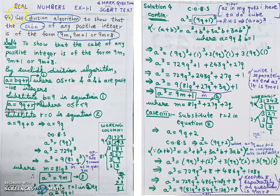The question is: use the division algorithm to show that the cube of any positive integer is of the form 9m, 9m plus 1, or 9m plus 8. This question is taken from chapter Real Numbers, Exercise 1.1 from the SCERT textbook, and carries 4 marks in the exams.